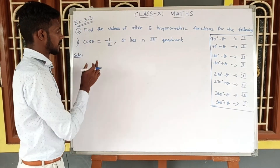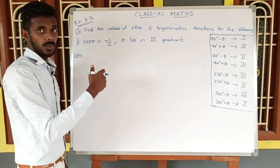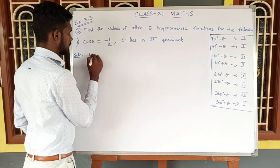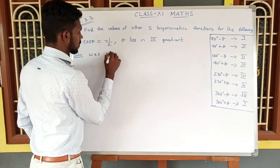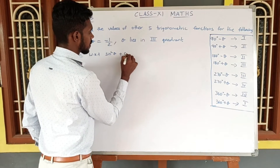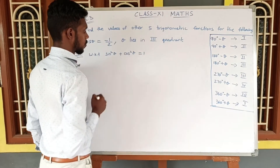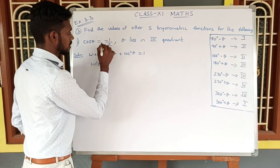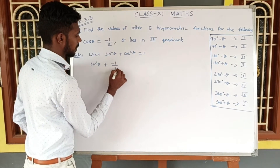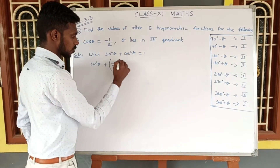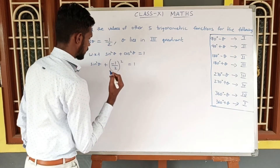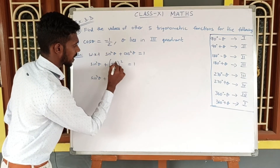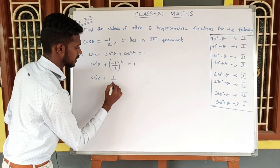First, we work with the cos θ value. Using the identity sin²θ + cos²θ = 1, we apply the cos θ value. So sin²θ + cos²θ = 1, where cos θ = minus 1 by 2. Squaring: cos²θ = (−1/2)² = 1/4.